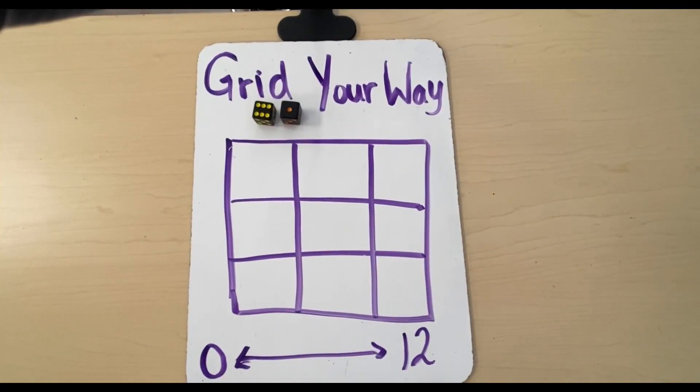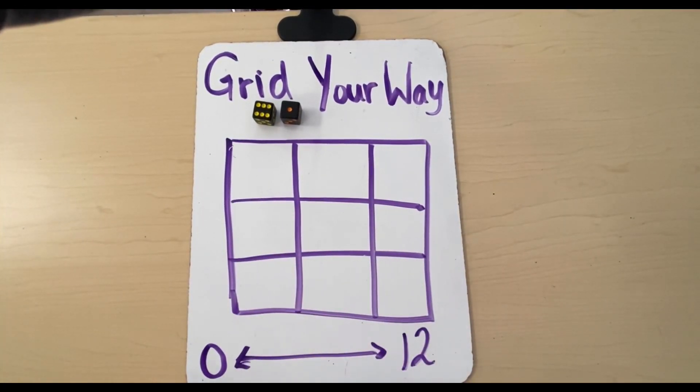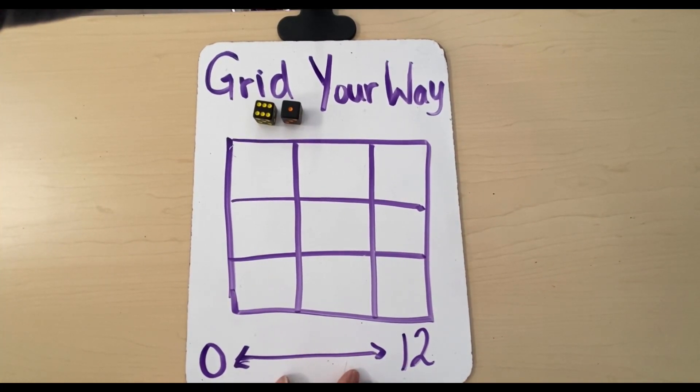Okay, so we're going to show you a couple of different variations. Grid Your Way can be done with six by six dice, and you're going to use a three by three grid, and the range of numbers going in your grid is going to be zero to twelve, and the children are going to fill it in, but we'll show you how to do that.